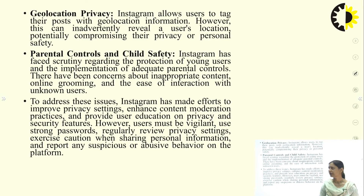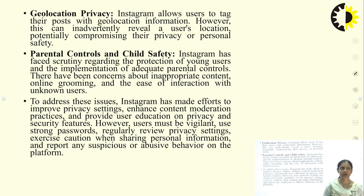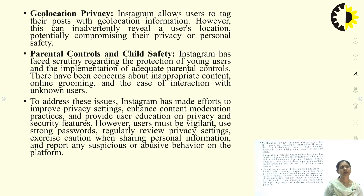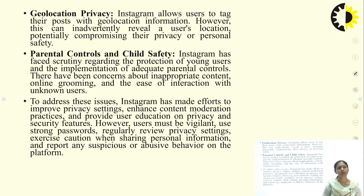Instagram allows users to tag posts with geolocation information; however, this can inadvertently reveal a user's location, potentially compromising their privacy or personal safety. Parental control and child safety have faced scrutiny regarding protection of young users, with concerns about inappropriate content, online grooming, and ease of interaction. To address these issues, Instagram has made efforts to improve privacy settings, enhance content moderation practices, and provide user education on privacy and security features.